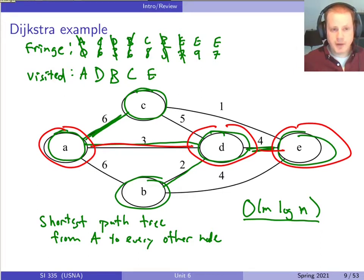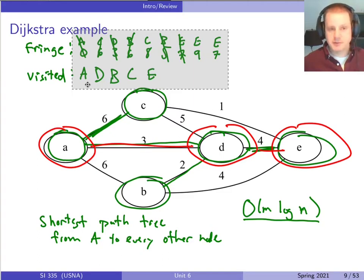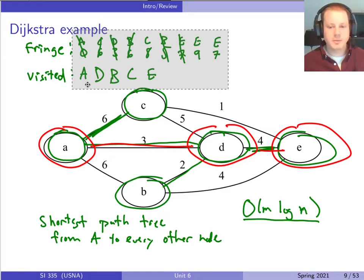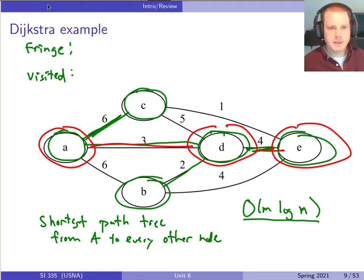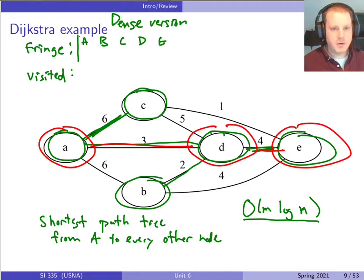There's one other variant of Dijkstra's algorithm — something you should have covered in data structures. It uses a different data structure for the fringe and the visited list. It works well with an adjacency matrix for the graph and is effective when the graph is dense, with a lot of edges. In this dense version, the fringe stores the shortest path so far known to reach each node.